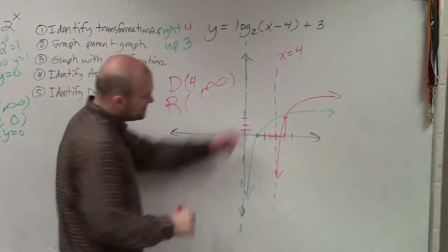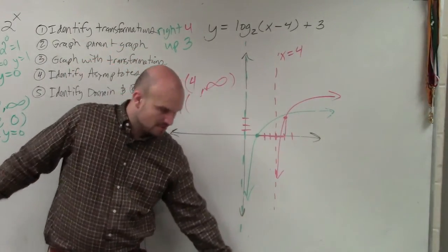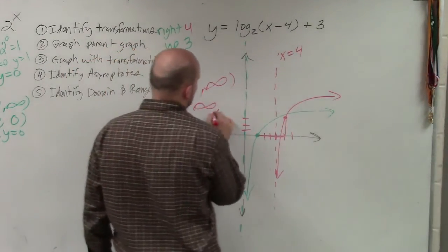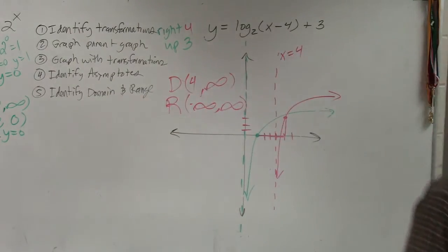And then the range is, how low does this graph go? Forever. Negative infinity. And it's going to go up to positive infinity. So that is all I wanted you guys to know for...